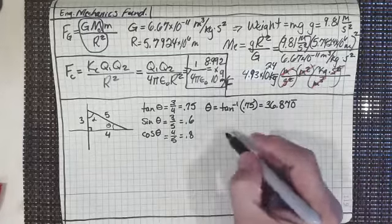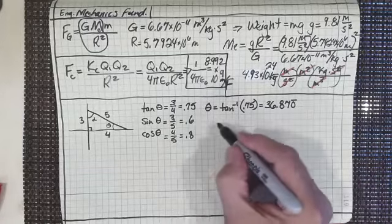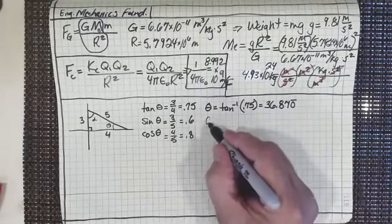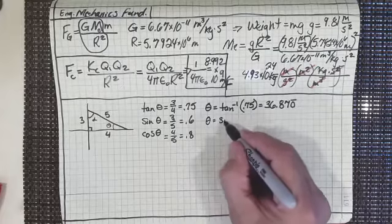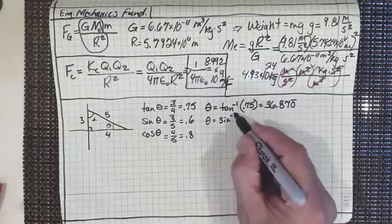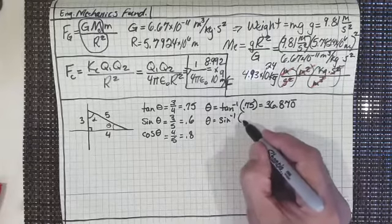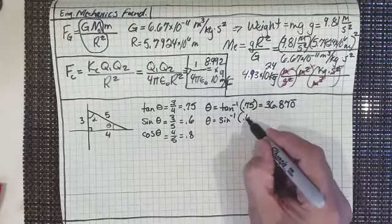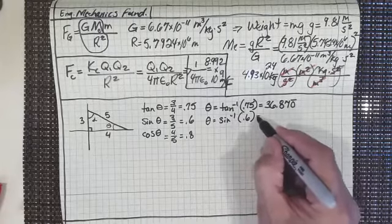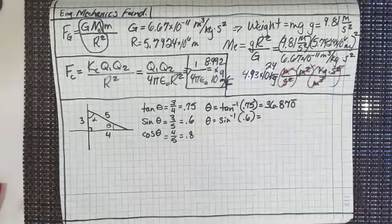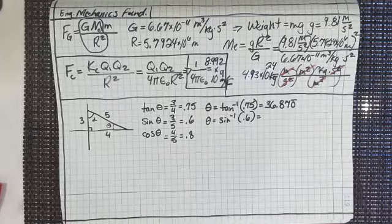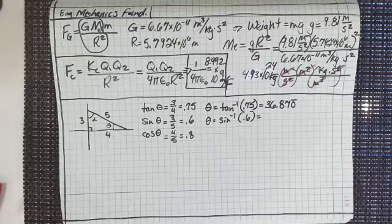If I do theta equals the inverse sine of 0.6, I should get exactly the same answer — and I do. It might be interesting to check on your own calculator. Of course, all the calculator ever does is apply plus, minus, times, and divide through geometric expansion series programs to figure these things out numerically.